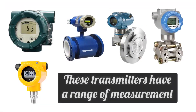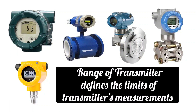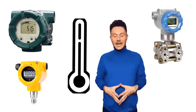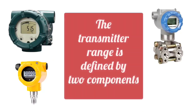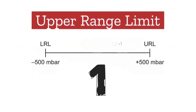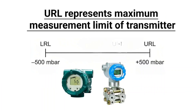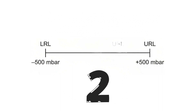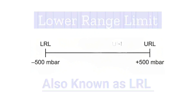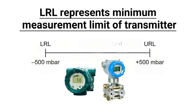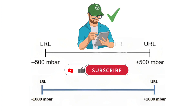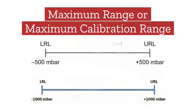These transmitters have a range of measurement. The range of the transmitter defines the limits of the transmitter's measurements — how high and low values the transmitter can accurately measure. The transmitter range is defined by two components. The first is Upper Range Limit, also known as URL, which represents the maximum measurement limit of the transmitter; the transmitter cannot measure values higher than this. The second is Lower Range Limit, also called LRL, which represents the minimum measurement limit; values lower than this cannot be measured. LRL to URL is also called maximum range or maximum calibration range.